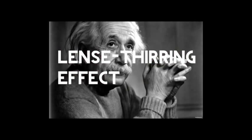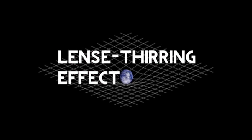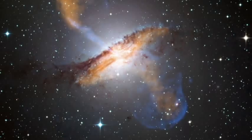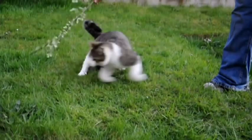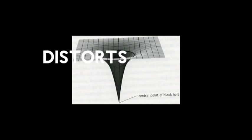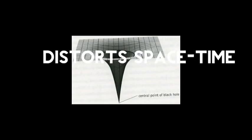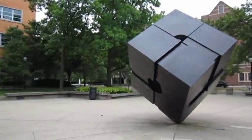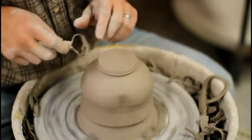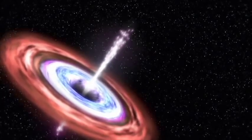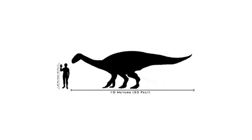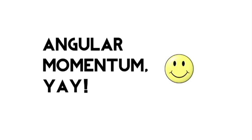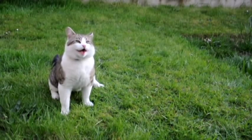and is related to Einstein's general theory of relativity. Put very simply, the rotation of a massive object distorts space-time, causing any nearby particles to rotate as well. Fortunately, though, the Lense-Thirring effect is very small, and thanks to angular momentum, physics cat can rest easy tonight.